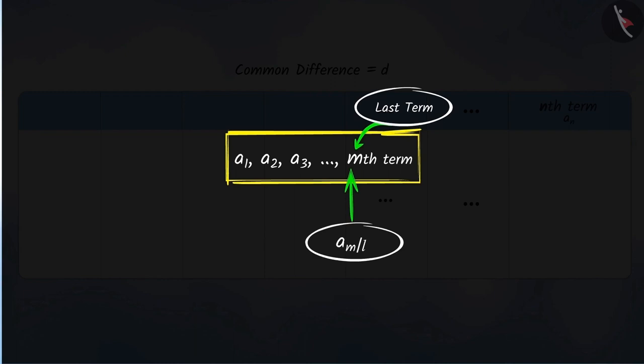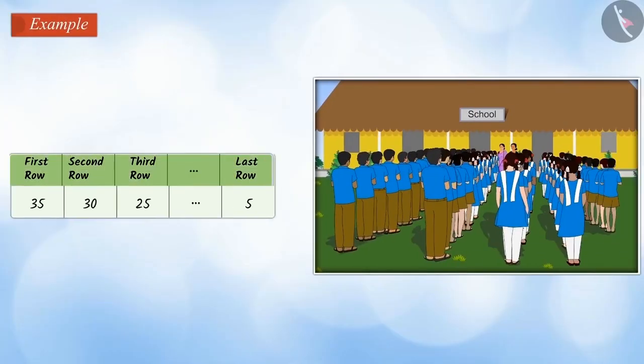Let's see an example. In a school ground, there are 35 students in the first row, 30 in the second row, 25 in the third row, etc. It has 5 students in the last row. How many rows of students are there in the school ground?